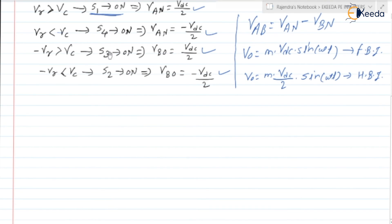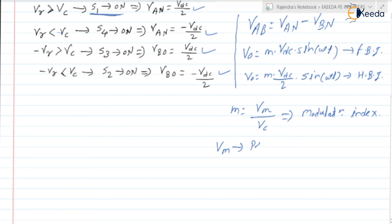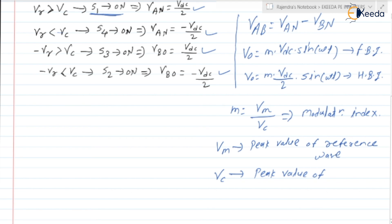M is the same as in bipolar, where M is equal to Vm by Vc, known as the modulation index. Vm is the peak value of the reference wave or reference signal, and Vc is the peak value of the carrier wave or carrier signal.